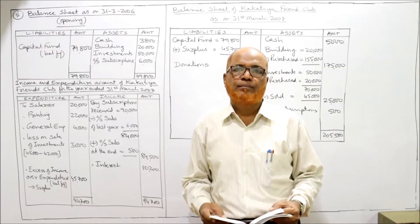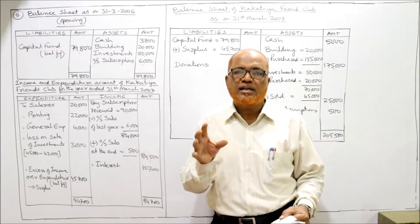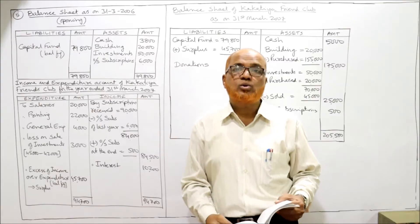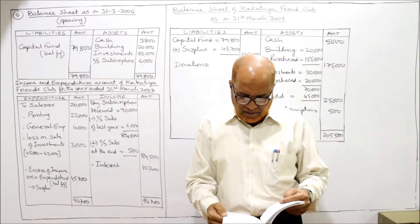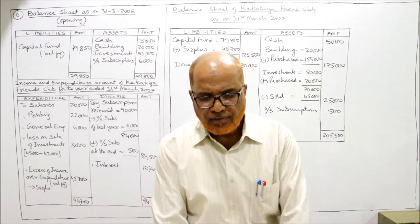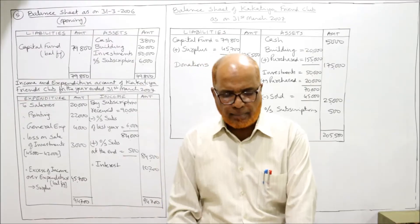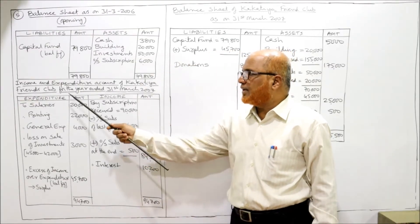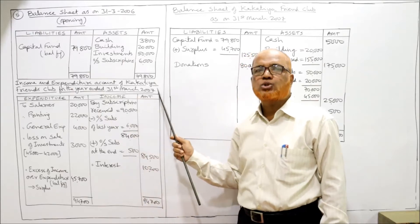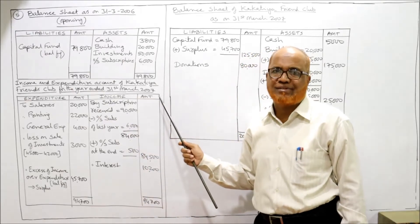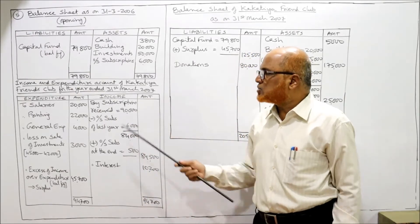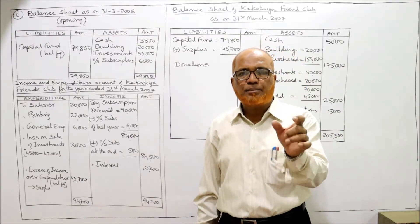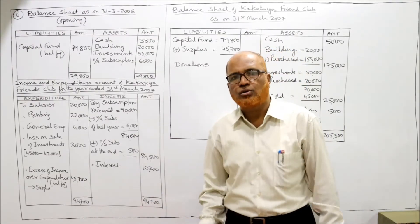The outstanding subscription at the end of the current year is 500, which will be added to subscription received. Now we make the income and expenditure account of Kakatiya Friends Club for the year ended 31st March 2007. Subscription received during the year is 90,000.